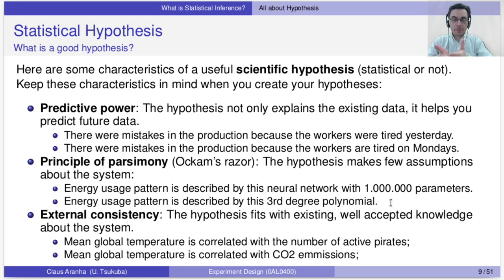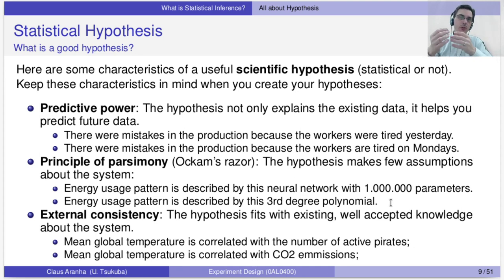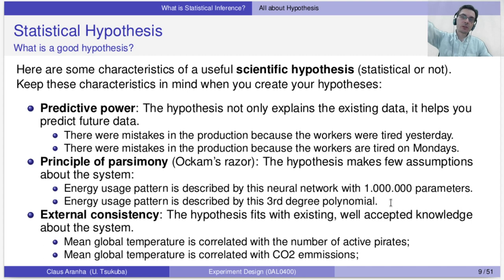We can make many hypotheses from the same question — so what makes a good hypothesis? There are some characteristics that make a hypothesis good for testing with an experiment. One is predictive power: a good hypothesis not only explains the existing data but also helps you predict future data. If the hypothesis only predicts the past, you test it, maybe get support for it, and that's it — it doesn't serve for anything in the future. If you're doing an experiment, you probably want to see if the hypothesis holds in the future, so you want your hypothesis to have predictive power.